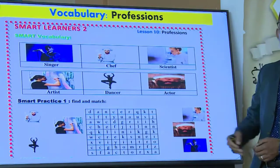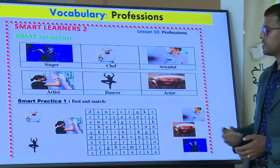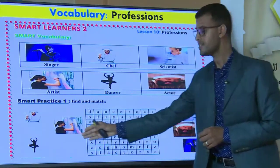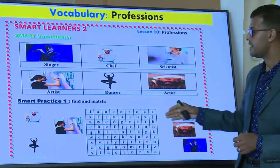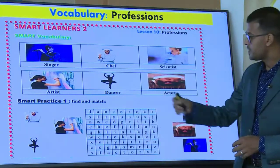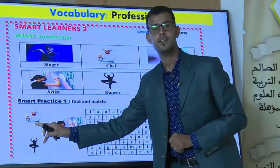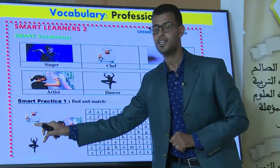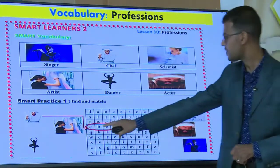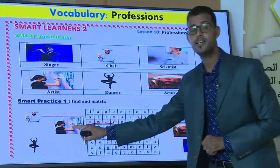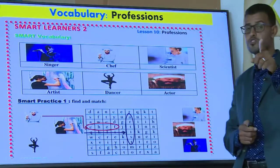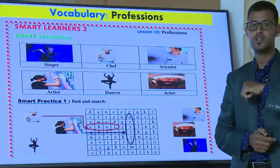The next one is dancer, and the last one is actor. Now let us move to practice. I want you to find these professions in the pictures and match them to the words in the word search. Who is this person? What does she do? She is a chef. And this one is an artist.